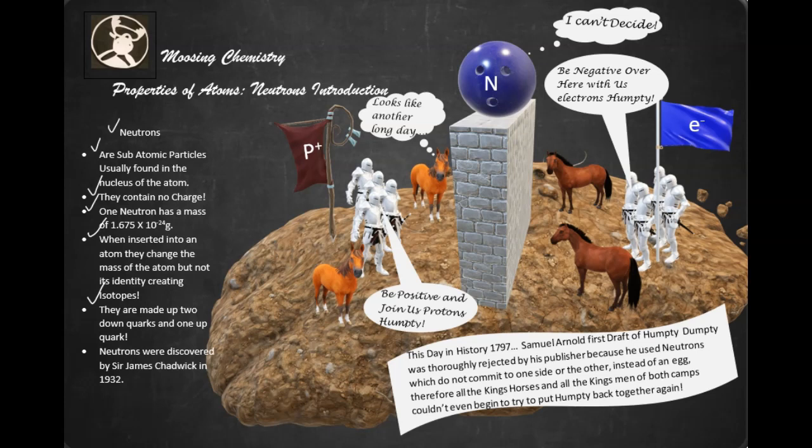Last but not least, neutrons were discovered by Sir James Chadwick in 1932.